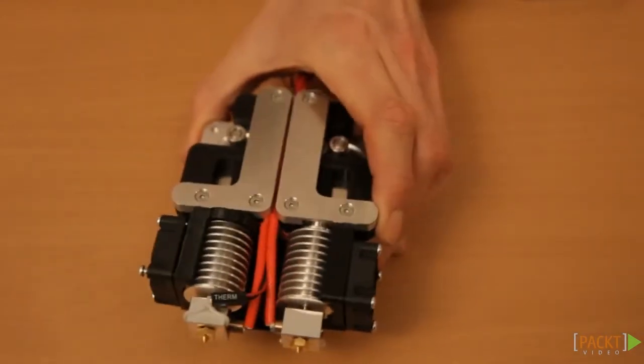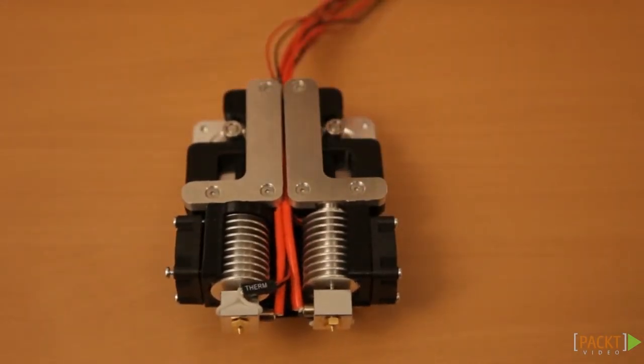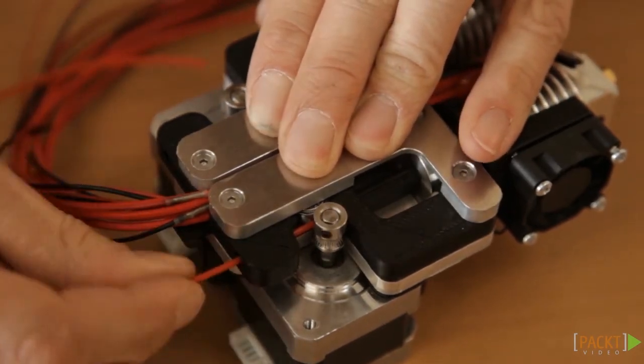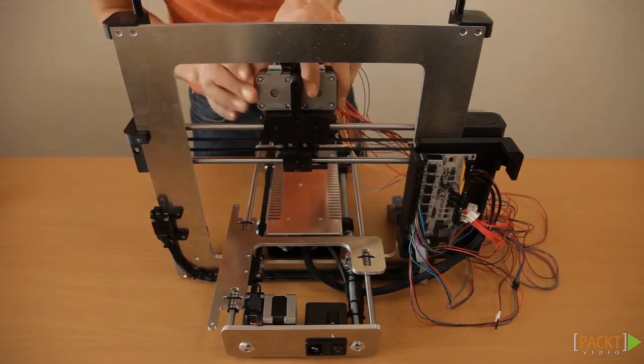And there you have it. You've built the extruder. In the next video you will see if the mechanism works correctly. You'll mount it to the printer and connect the cables.